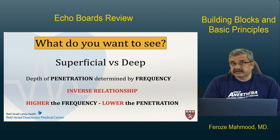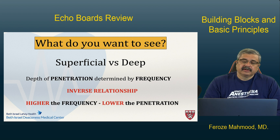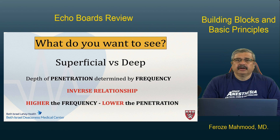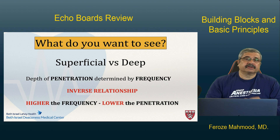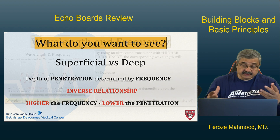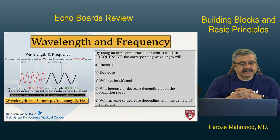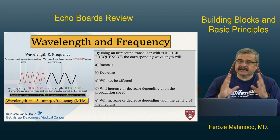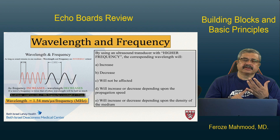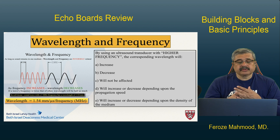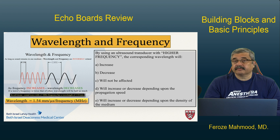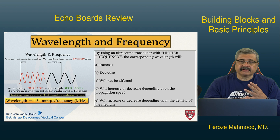Penetration and frequency have an inverse relationship, meaning the higher the frequency, the lower the penetration into the tissues. If you want to see a deeper structure, you need a low frequency transducer; for a superficial structure, a higher frequency transducer is more desirable. As frequency increases, wavelength decreases. The key relationship to remember is that wavelength equals 1.4 millimeters per microsecond of frequency. Higher frequency gives better resolution but less penetration; lower frequency gives more penetration but less resolution.